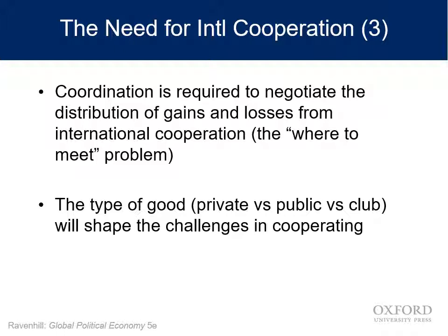Each of these types of goods provides a different challenge when provided internationally. When we think internationally, we need to think of these as not necessarily being goods in the physical sense. Security, a stable monetary system — when the system goes unstable, like in the Great Recession, the whole world suffers. A few nations — the United States, the European Union, China — coordinated and spent money buying up assets, providing a public good: the stability of the system.